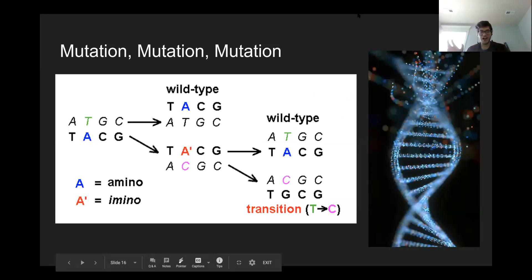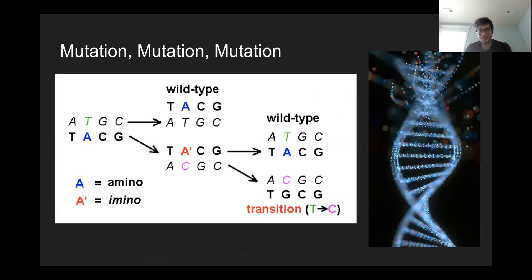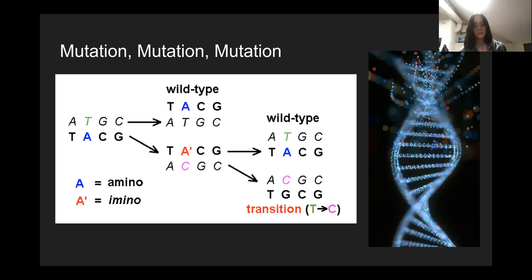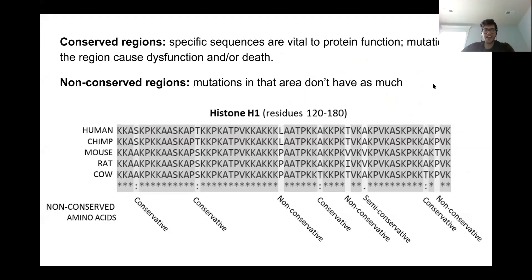Mutations really happen at the level of DNA. DNA is being copied and used all the time, so it gets damaged a lot. Here's an example of how a DNA sequence can go from reading TACG to TGCG and ACGC in just one or two generations of replication. When these mutations accrue in the DNA, they end up impacting the proteins that the DNA is representing — either directly changing the protein or affecting when it gets turned on or off.